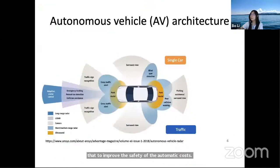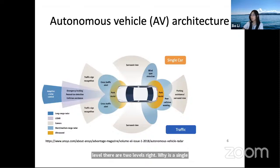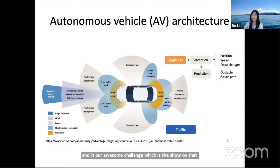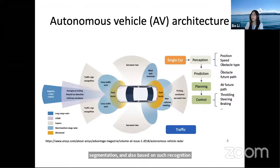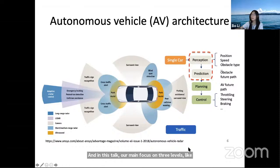When talking about autonomous driving vehicles at a high level, there are two levels: single vehicle and traffic scenarios. For a single vehicle, there are several components — perception is very important, and great algorithms can even outperform humans at object detection or segmentation. Based on recognition and prediction, planning, control, and decision-making follow. In this talk I'll focus on three levels — perception, planning, and traffic — to give examples of what attacks could look like against each component.